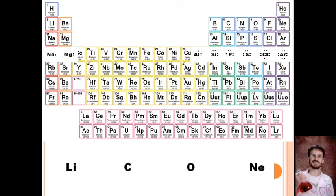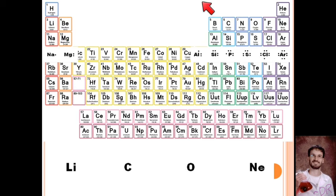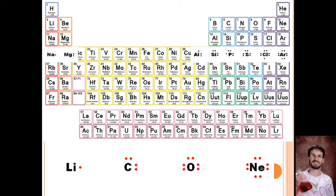Using that pattern, write the Lewis dot structures for each of these elements. Lithium is in the first column, so it has one valence electron. Carbon — if we skip the ones in the middle, carbon is in the fourth family, so it has four valence electrons. Oxygen is way out over here in the sixth family. And neon is in the eighth family and has eight valence electrons. We use Lewis dot structures when we match up different elements and figure out how many bonds they make with each other.